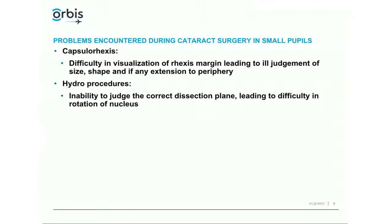Ideally during phaco, the most ideal step in hydrodissection is cortical cleaving hydrodissection, which creates a plane between the capsule and the entire cortical matter along with the nucleus. To do this, you go under the rhexis edge, tent it up a little, and inject so the fluid wave passes right across. This allows minimal hydrodissection and the nucleus rotates on its own. The major benefit is that at the end of phaco you are left with very little cortex — sometimes none at all.